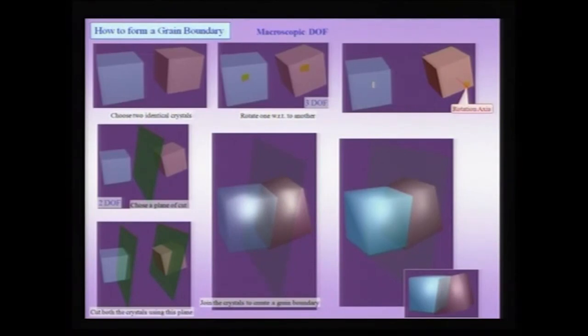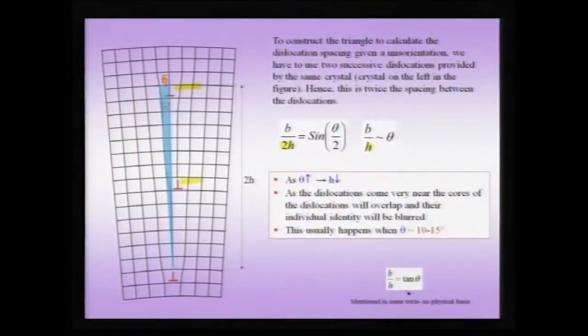Having done so, I then need to choose a plane which can act as the grain boundary. Low angle grain boundaries can spontaneously form during a process known as polygonization, which takes place during recovery of a cold-worked material. Therefore, they play a very important role in materials and can spontaneously form during the recovery process.